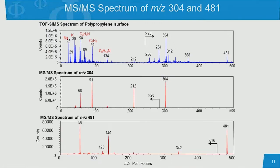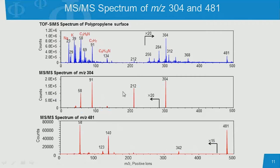What we can do now is produce very clean fragmentation patterns of each individual molecule. Shown below is the MS-MS spectrum of 304 — it fragments into just three main peaks: 212, 91, and 58 — and we can see those same fragments in the TOF-SIMS spectrum. It's not that TOF-SIMS doesn't produce fragments; they're just all mixed together. By separating out the fragments from a single precursor, the spectrum is dramatically simpler. And here's the 481, again producing just a handful of major fragments that are different — each molecule will fragment differently, which is the powerful part of MS-MS. So now the job is to identify these simple spectra.